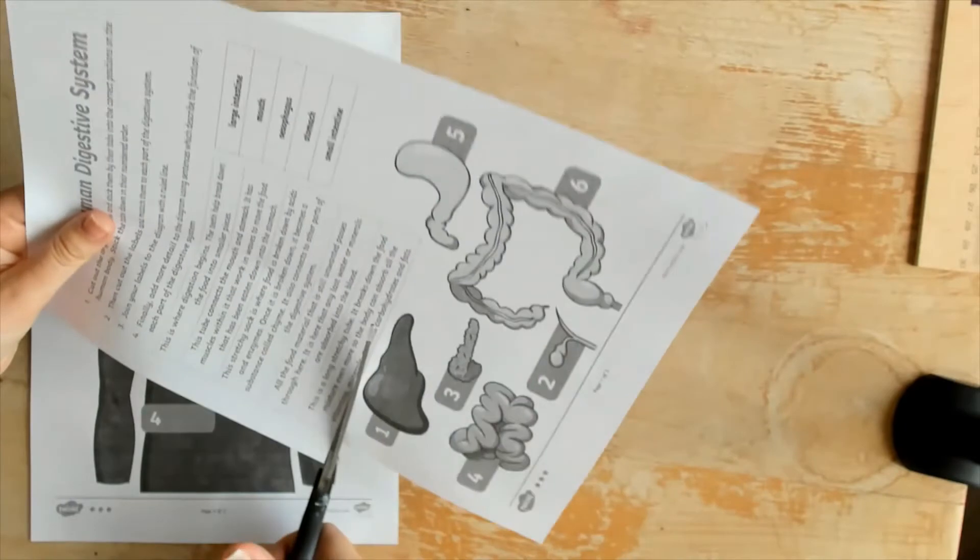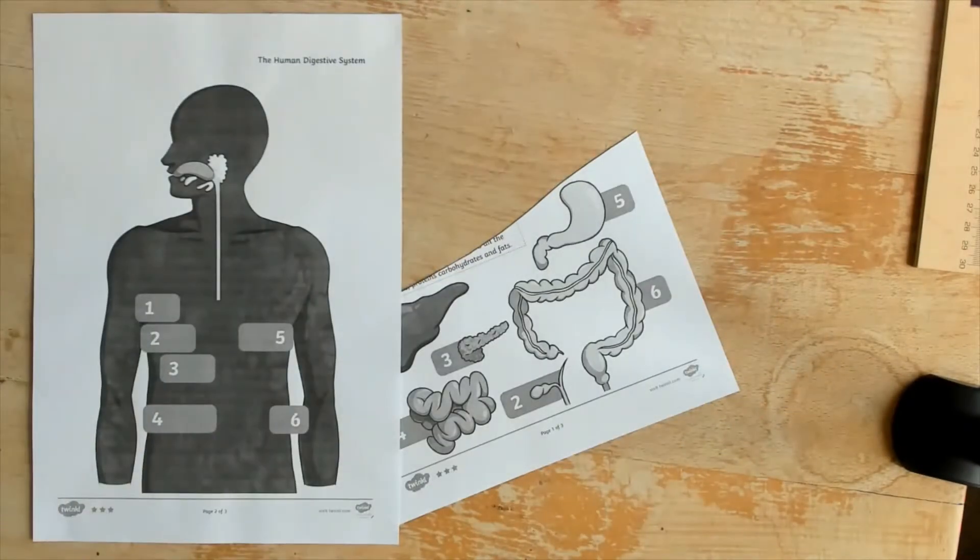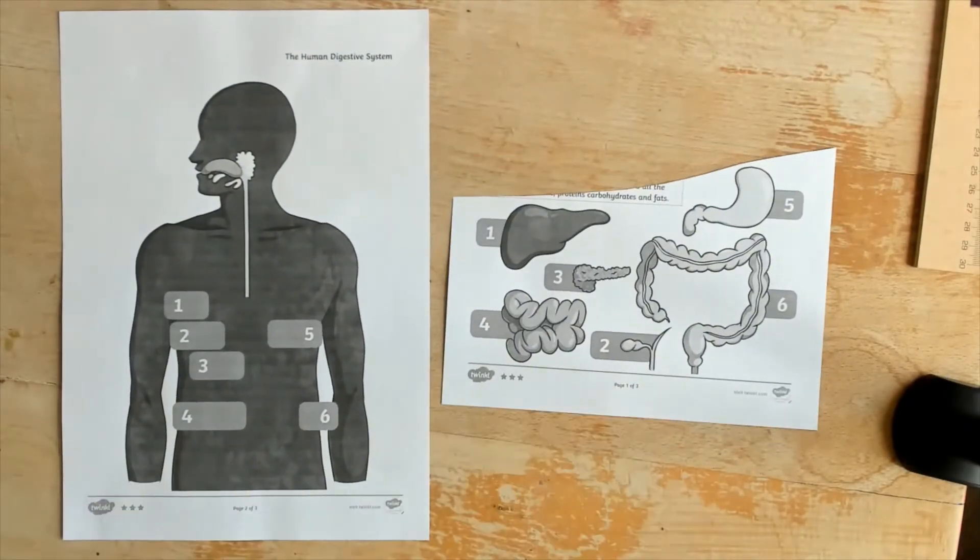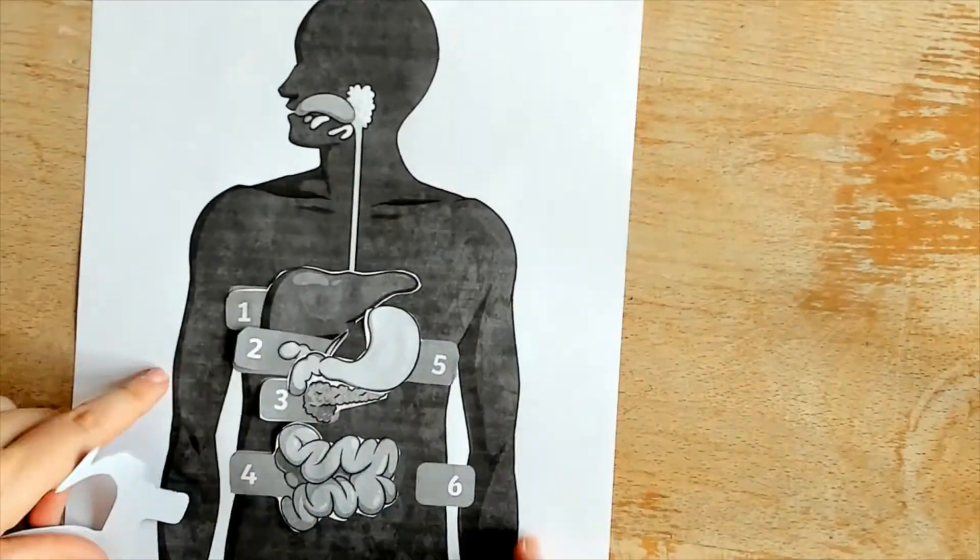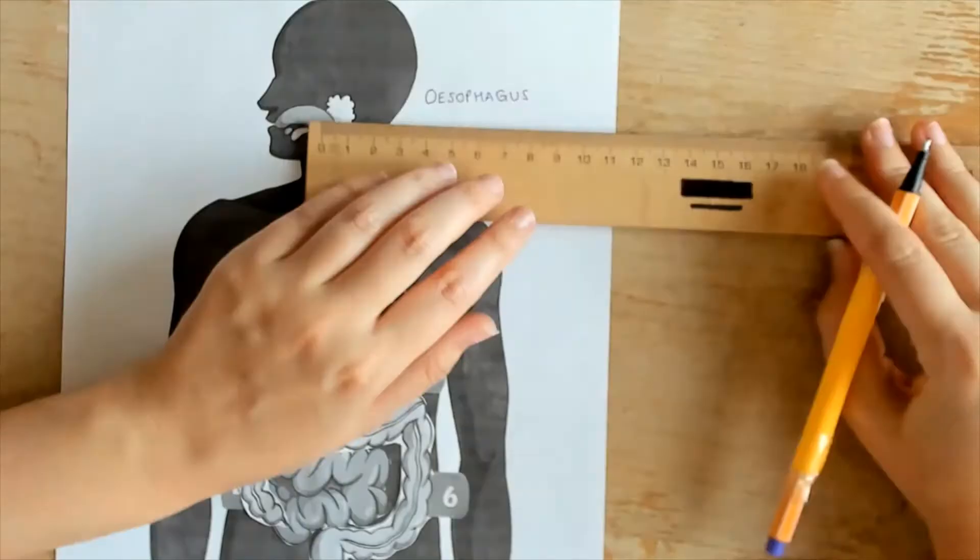You can even add another level of challenge by slicing off the name labels and function boxes and challenging your learners to write their own. This would show the exact details learners have retained and would make each piece of work individual.